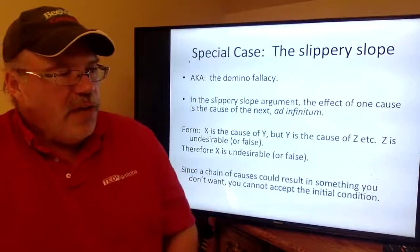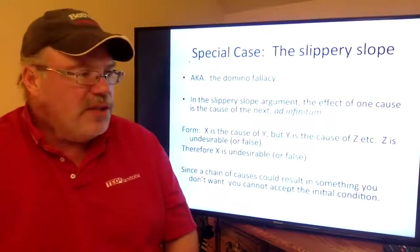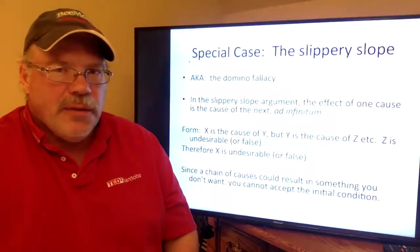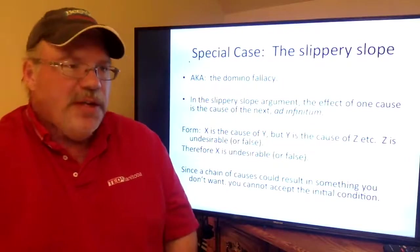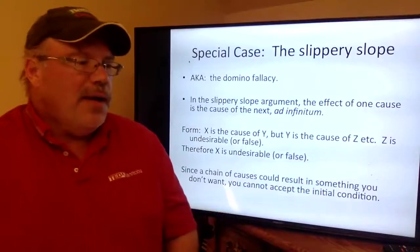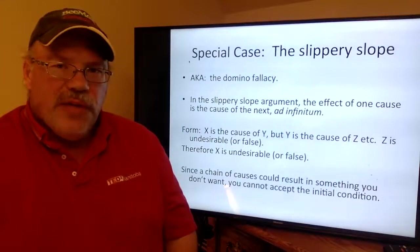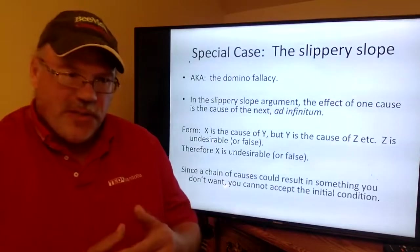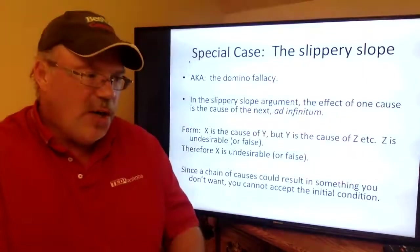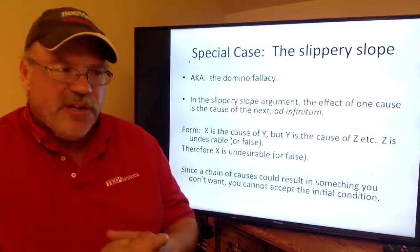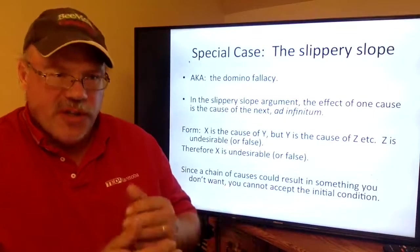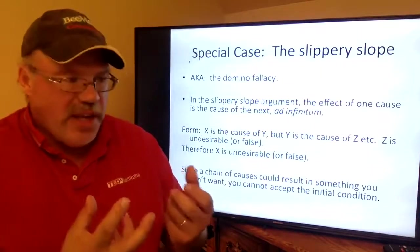A special case of false cause is the slippery slope fallacy, sometimes called the domino fallacy. Canadians can relate to being on an icy hill, sliding to the bottom and being unable to stop. In logic, this is the concept that if you accept a certain initial step, there will be no way of stopping. The hidden presumption is that once you start, the series of causes is unstoppable.